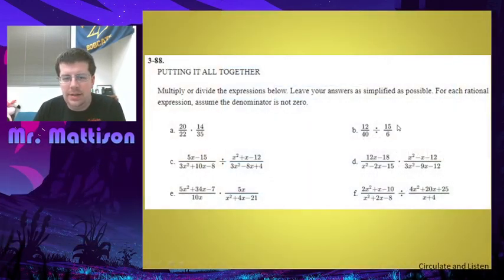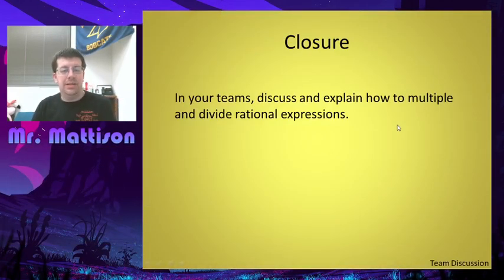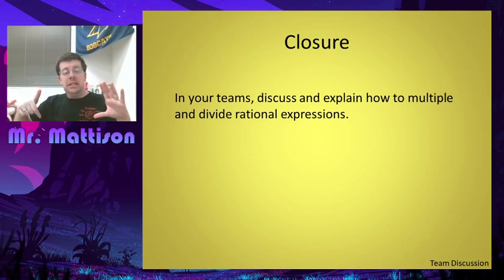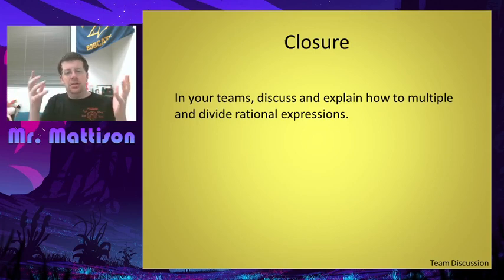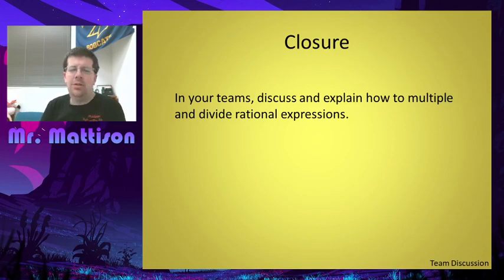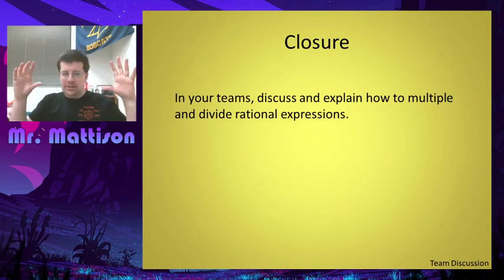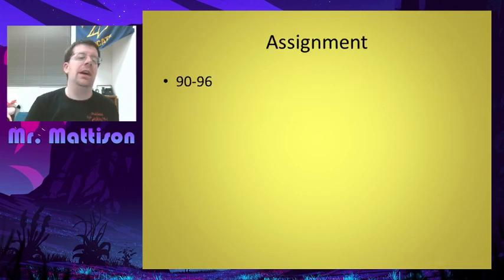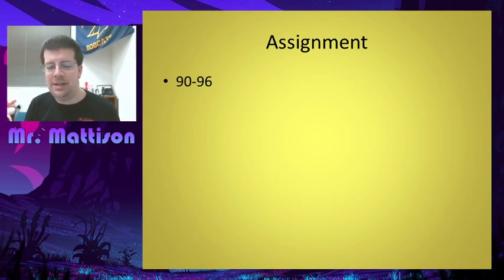With that, our process here is: factor everything; take the reciprocal and multiply if it's division, otherwise just multiply; then cancel things out; look at what you have left; and check for domain restrictions on both the original — if it's division — and after it's been flipped. Awesome. Here is our homework for 3.2.3: problems 90 through 96. I'll talk to you guys next time.